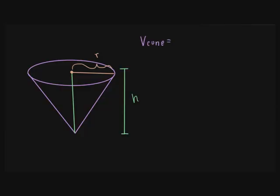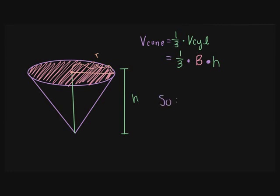If the volume of the cone is exactly one-third of the volume of the cylinder, we can write this as the volume of the cone is one-third times the base times the height, so the volume of a cone equals one-third times pi r squared times the height.